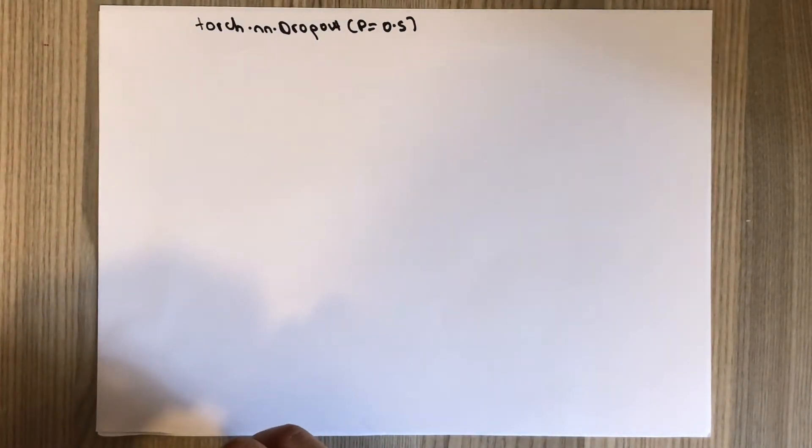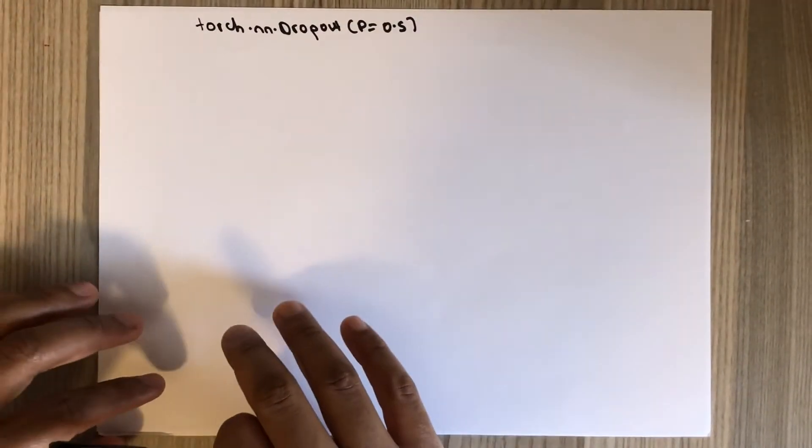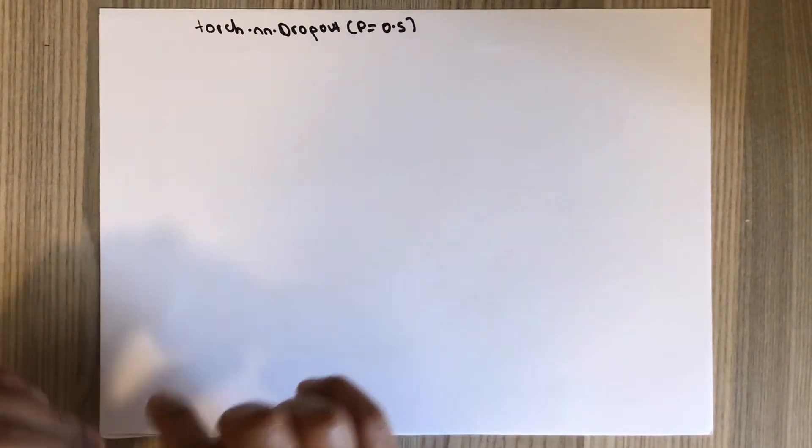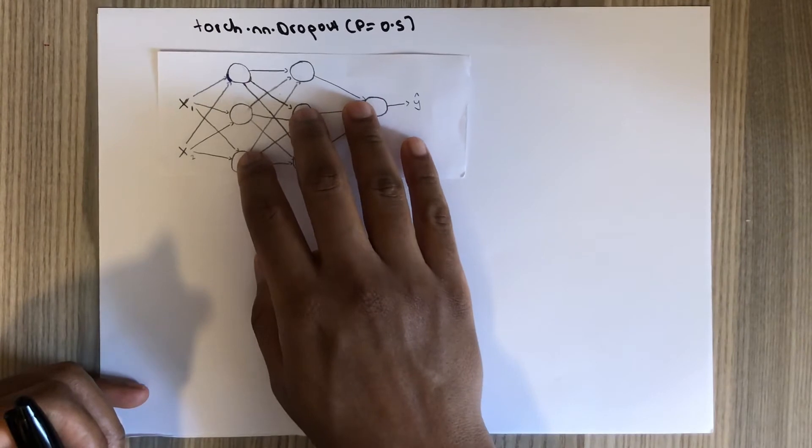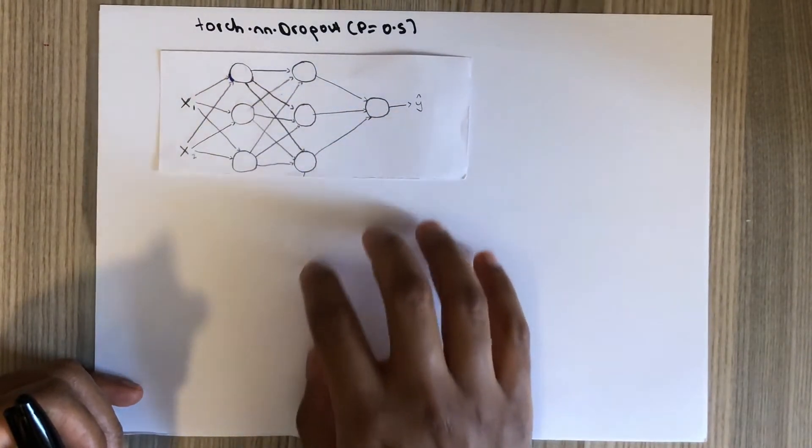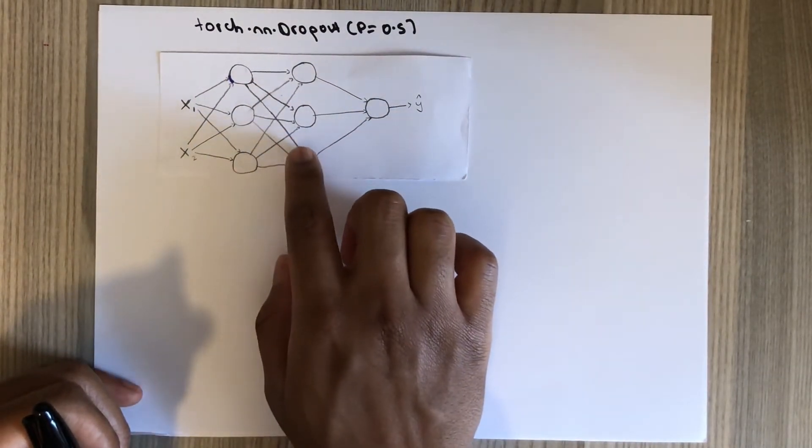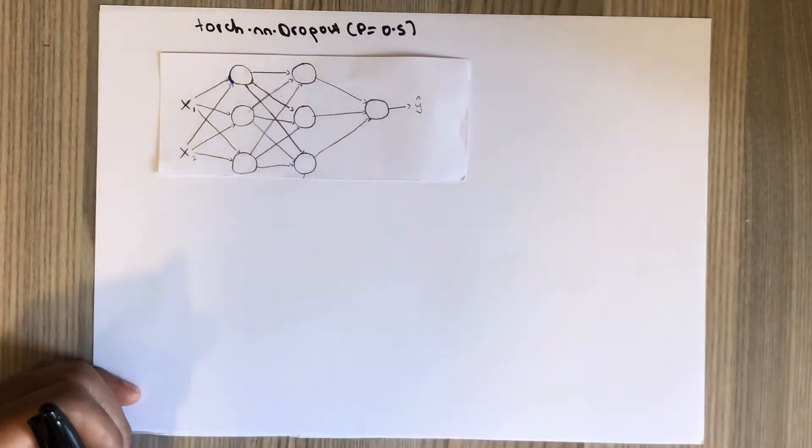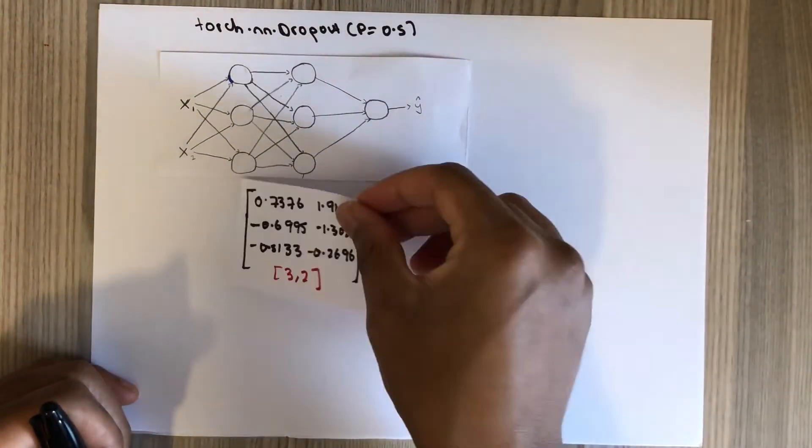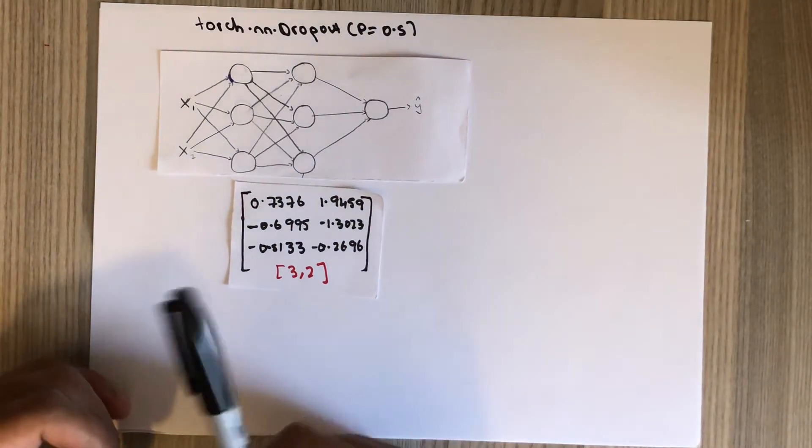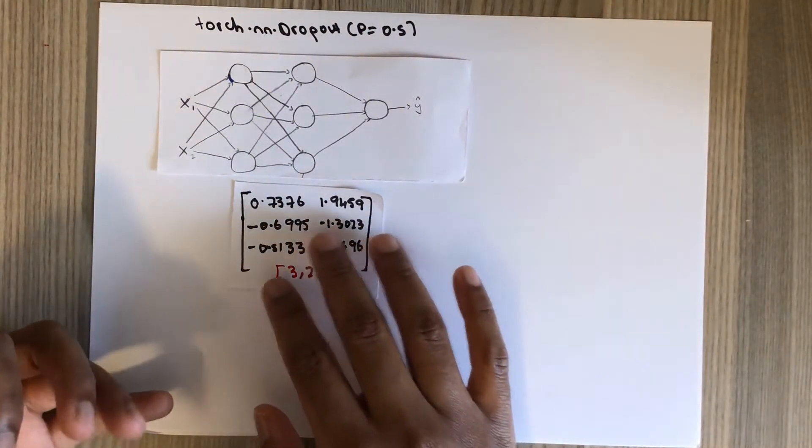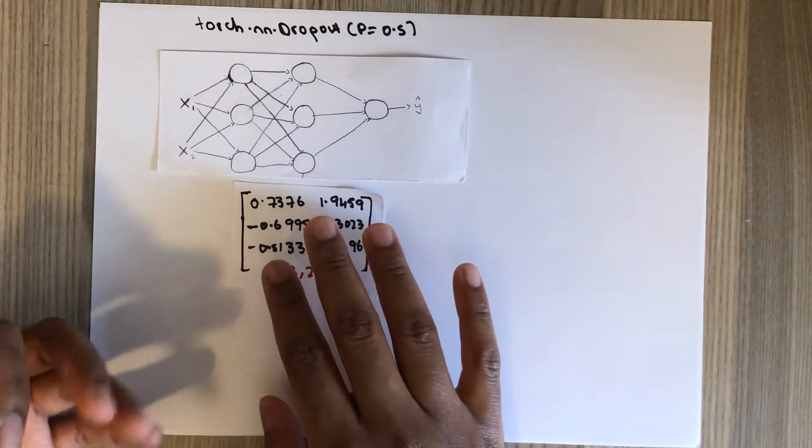Using samples from a Bernoulli distribution. So you might have a network like this, a simple network, and you want to apply dropout at this layer. If the activations of this layer are something like this of dimension 3 by 2...